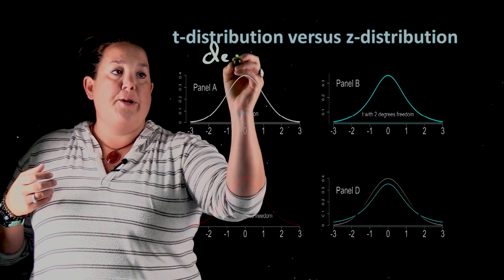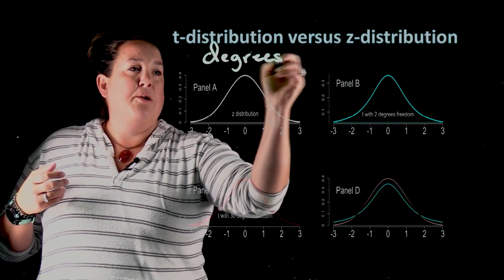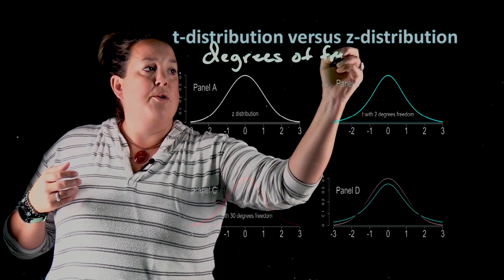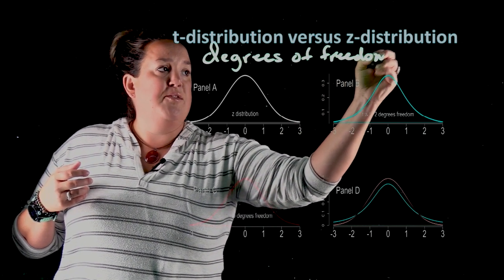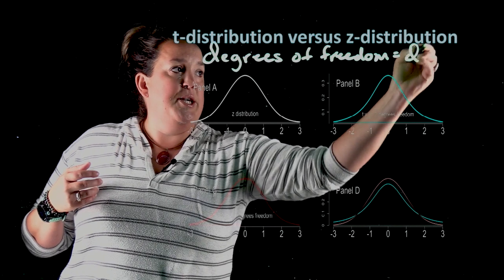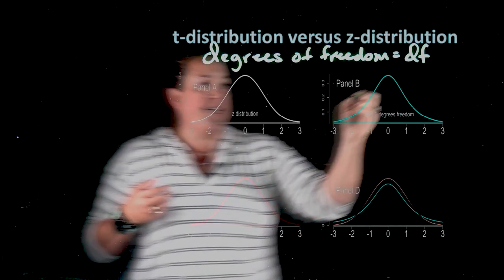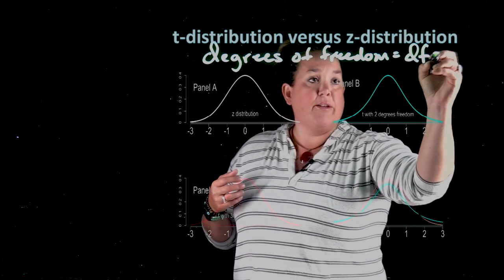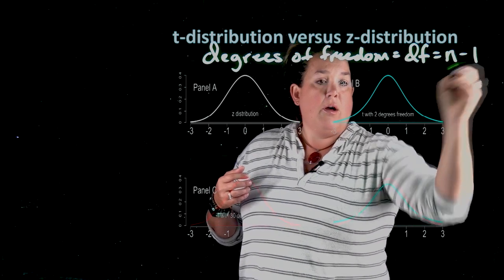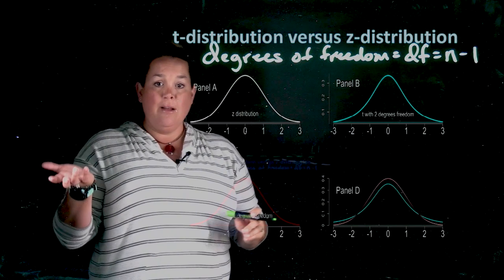So degrees of freedom is often just shorthanded to df, and it's the simplest calculation you'll have in statistics: n minus 1. Remember that n is sample size.